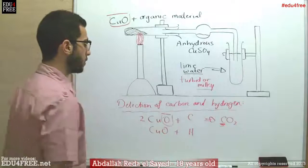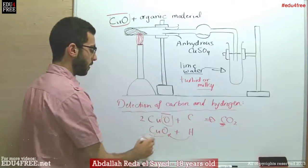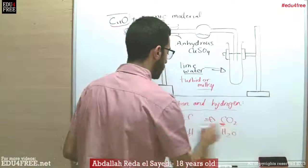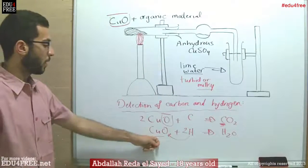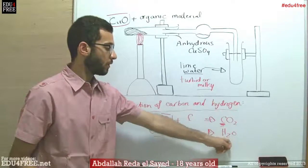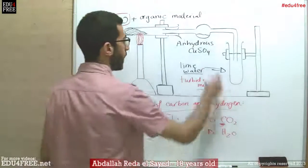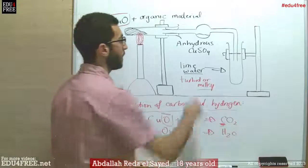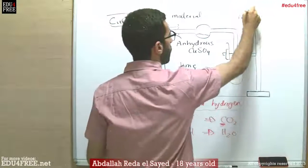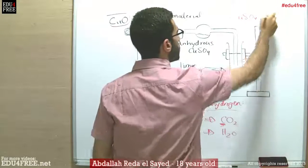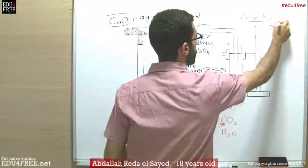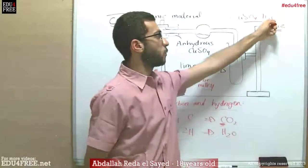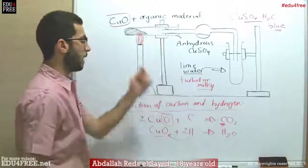For hydrogen, the hydrogen will also take the oxygen of the copper oxide, giving us water vapor. Here we have two moles of hydrogen and one mole of copper oxide, giving us water or water vapor. When the water vapor passes over the anhydrous copper sulfate, it immediately changes into hydrous copper sulfate — it bonds to the water, forming hydrous copper sulfate, which is known for its blue color. So instead of being white, it becomes blue, indicating the presence of water, or in other words, the presence of hydrogen.